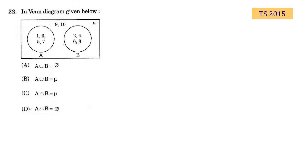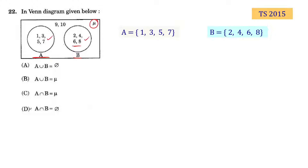Let us solve this question now. A is a set with elements 1, 3, 5, and 7. B is a set with elements 2, 4, 6, 8. Mu is the universal set. A alone elements are here, B alone elements are here. The universal set mu has elements 1, 2, 3, 4, 5, 6, 7, 8, 9, and 10.